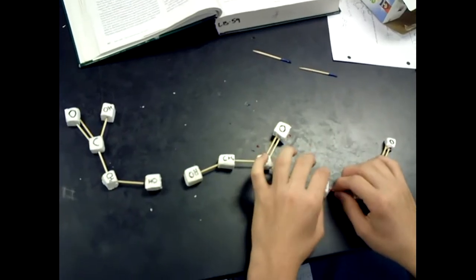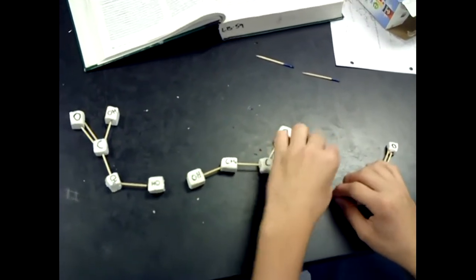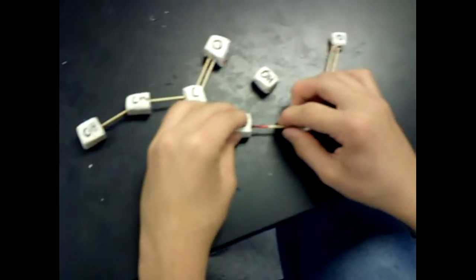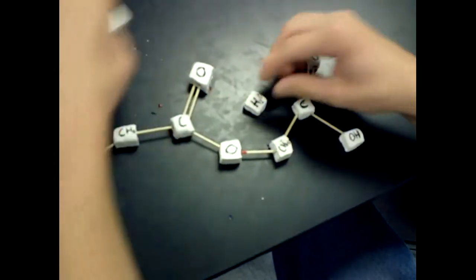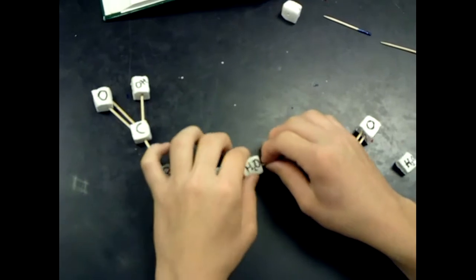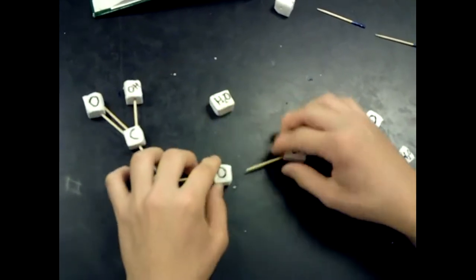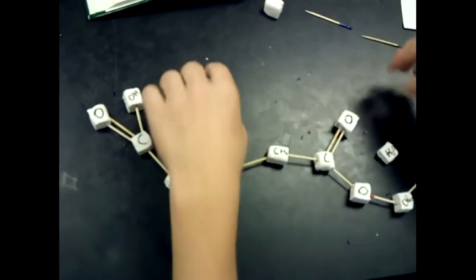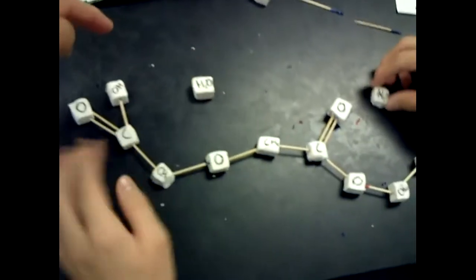Okay, go. Okay, so we have three monomers, and they will come together to make water and a dimer, and then the dimer will come together with the other monomer to make water. Now water is part of the molecule, is it? No, it's separate. Right, so this is your water? Yeah.